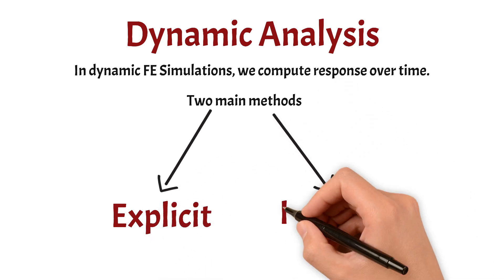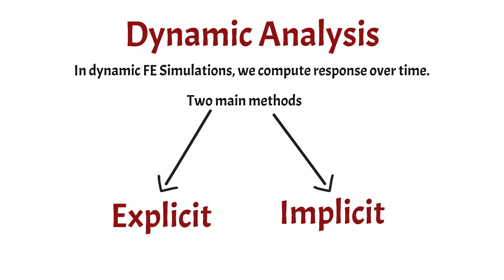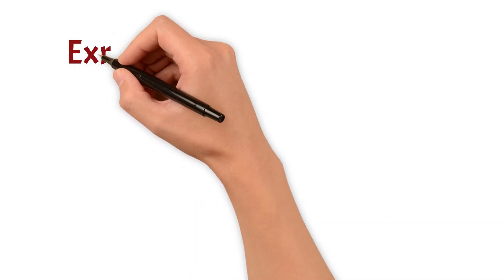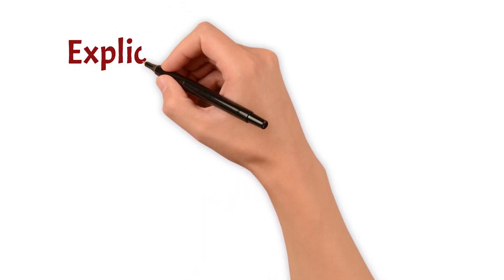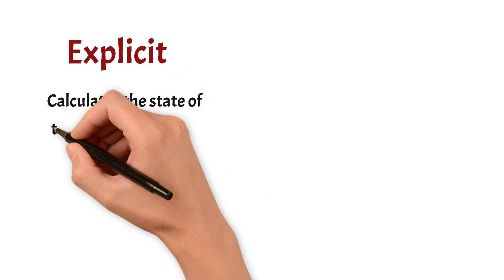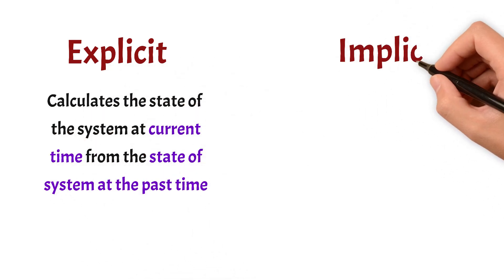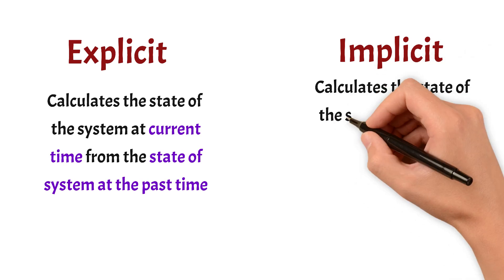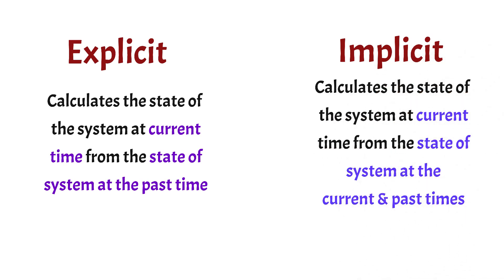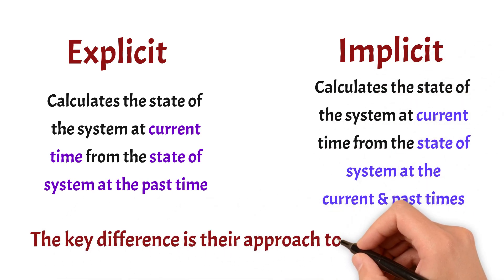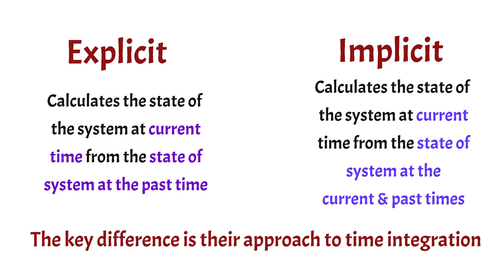There are two main methods — the explicit and implicit methods — under this dynamic analysis. Explicit analysis is the one where we calculate the state of the system at the current time from the state of the system at the previous time, whereas implicit calculates the state of the system at the current time from the state of the system at the current as well as the previous times. The key difference is their approach to time integration.